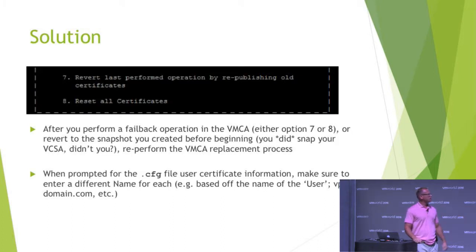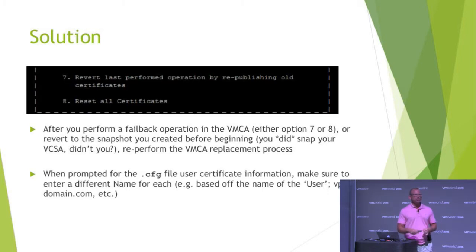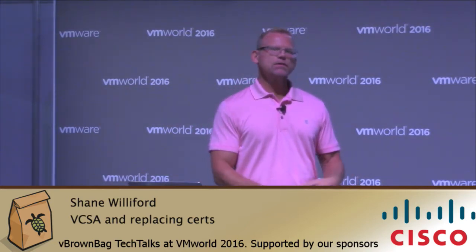So what do you need to do? On the second bullet there, basically just change the name parameter for each solution user or the machine user to make it different. For example, vpxd-yourdomain.com, vsphere-client.domain.com, or dash domain.com. Just name the name parameter differently and the rest of the information can be the same. Go through the process again after, of course, you've restored your vCenter appliance or reverted to your snapshot — hopefully you took a snapshot before you did all that. Do a different name parameter, submit your CSR, get your cert back, import it onto your PSC, and all should be good.